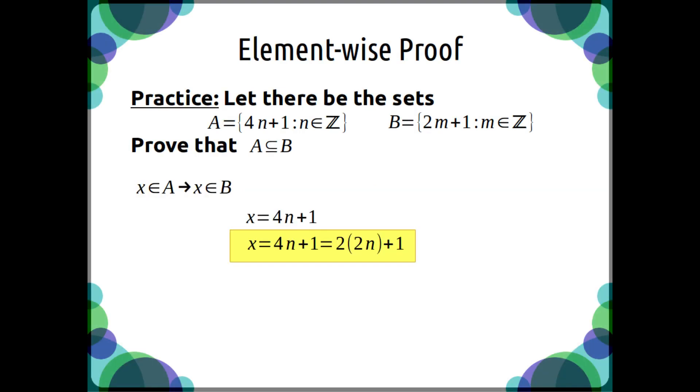So remember that you're proving the implication. If x is in A, then x is in B. And so you start with A's equation, and try to rewrite it so that it comes out to B's equation.